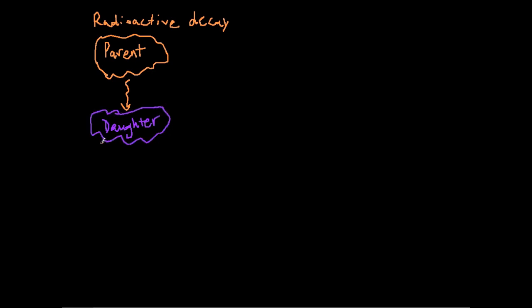So the parent decays down to a daughter. And if we wanted to look at this parent, if we kind of zoomed in here, imagine we have like this microscope or something, we can look at the individual atoms. So I'm just going to put P for parent, so these are parent atoms.